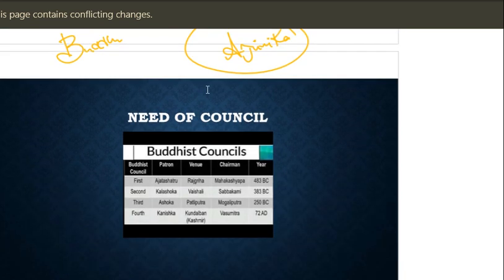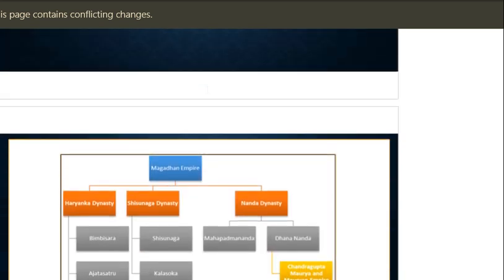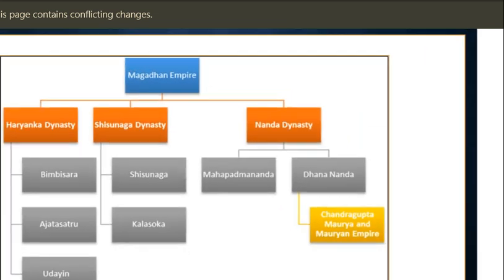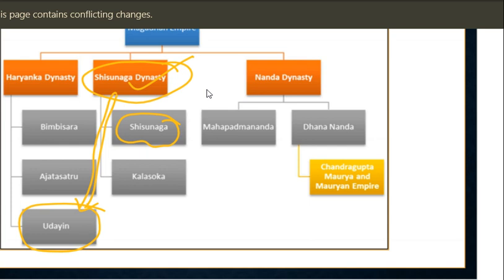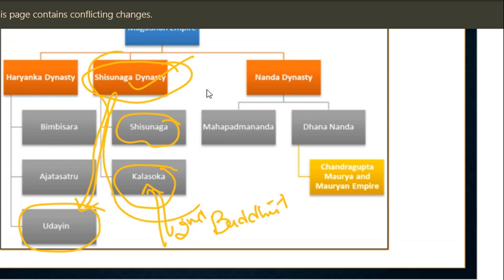The Shishunaga dynasty followed the Haryanaka dynasty. Shishunaga, who was a governor or leader, killed the last Haryanaka ruler and established the Shishunaga dynasty. The important king of this dynasty was Kalashoka, who convened the Second Buddhist Council. That is the importance of the Shishunaga dynasty.